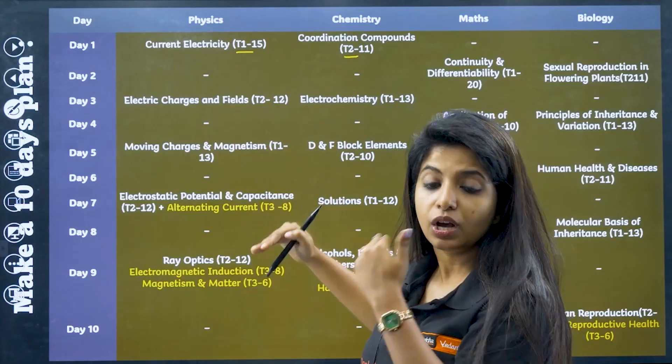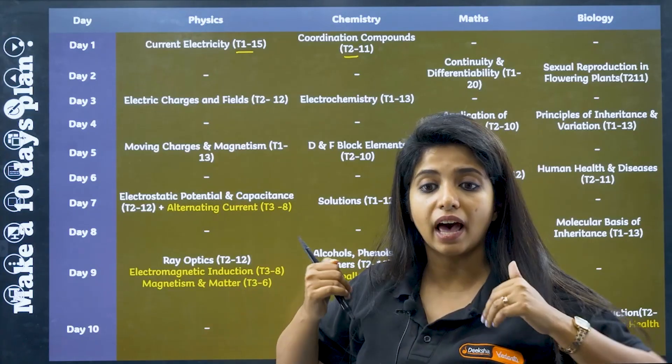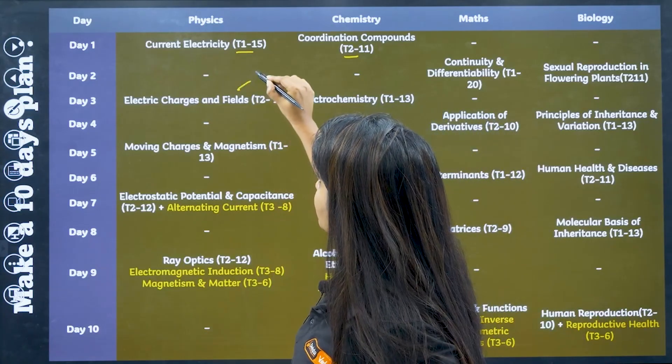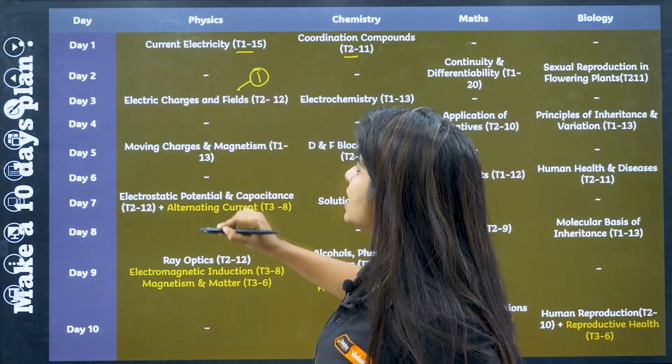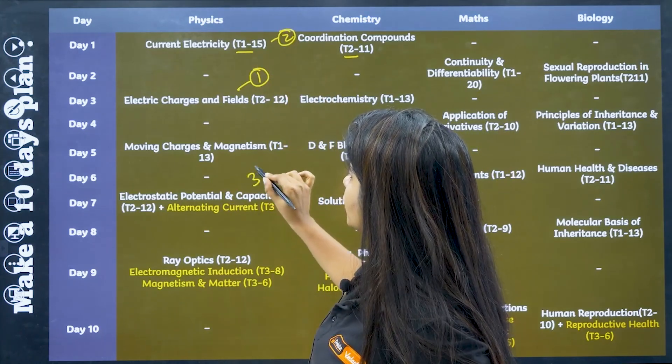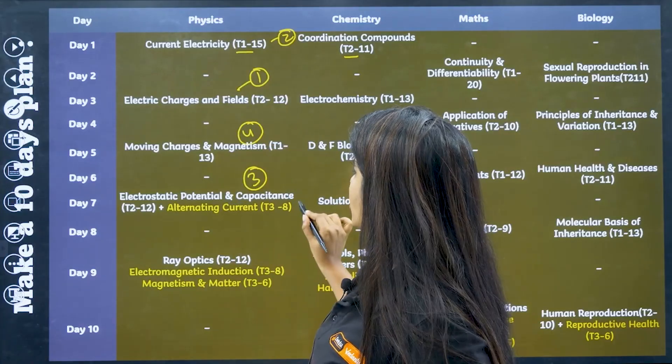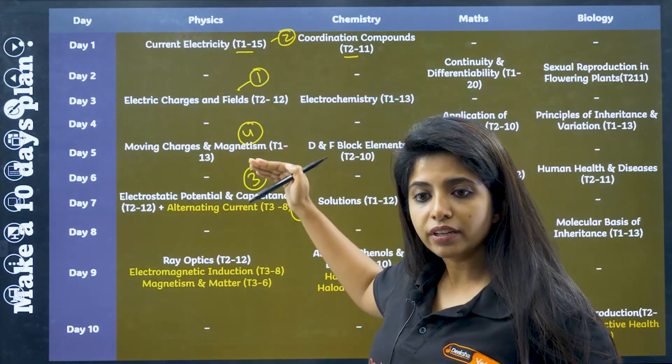Now obviously I can change the chapters. For example, if I am someone who have not studied any chapters of physics, I should know that electric charges and fields is the first chapter to get completed with. The second chapter should be current electricity. The third one should be electrostatic potential and capacitance, then moving charges, then alternating current. So you can reorder it in your own way.